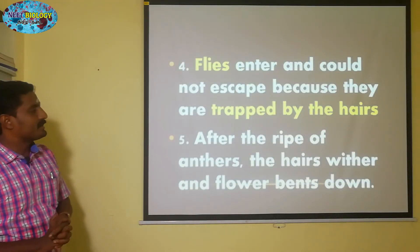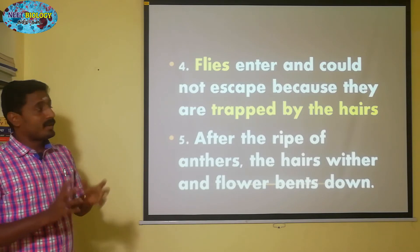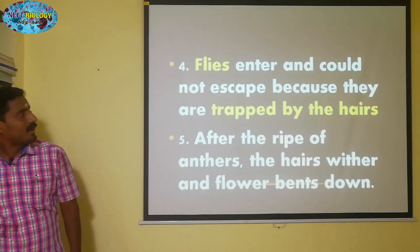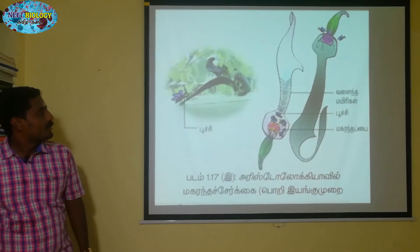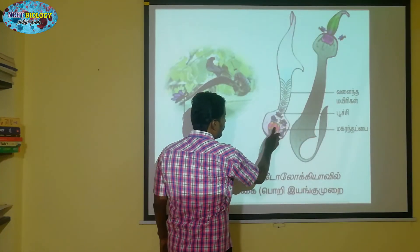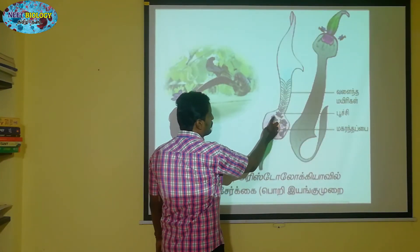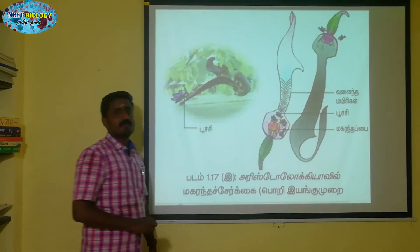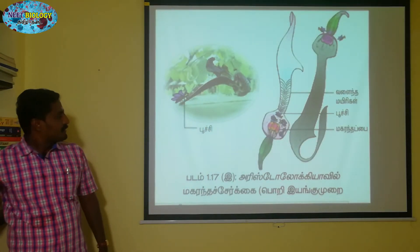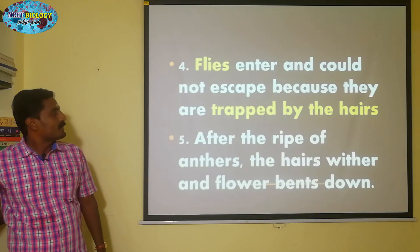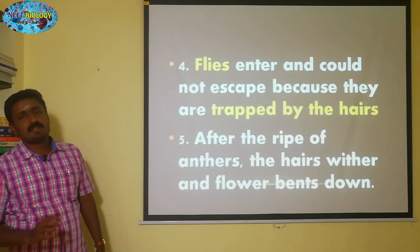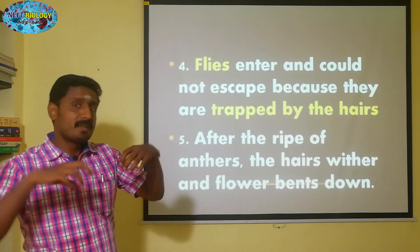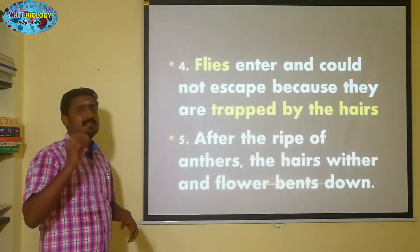After the ripening of anthers, the insects are trapped. There are insects and pollen grains. If there are anthers or pollen grains, they will be trapped there. The anther decays and there are many pollen grains on the insect.